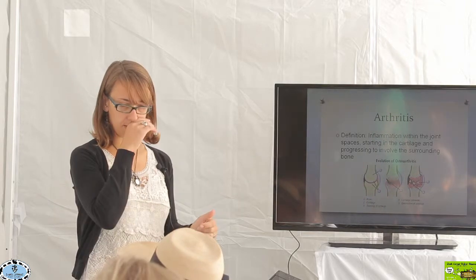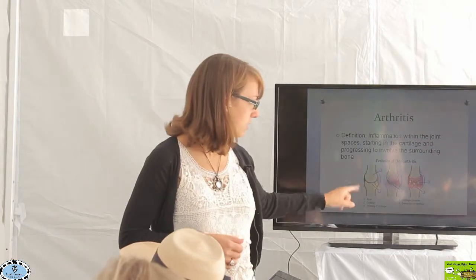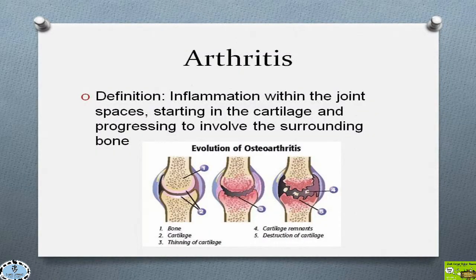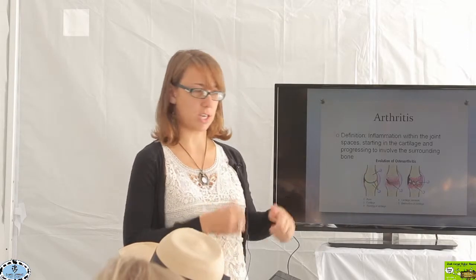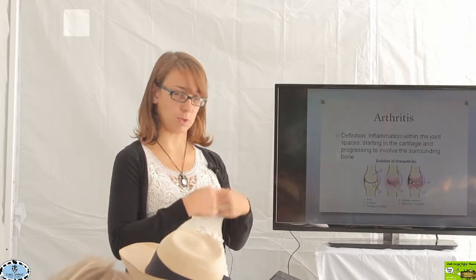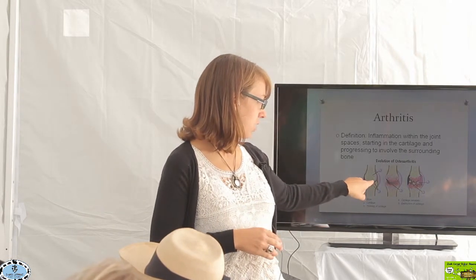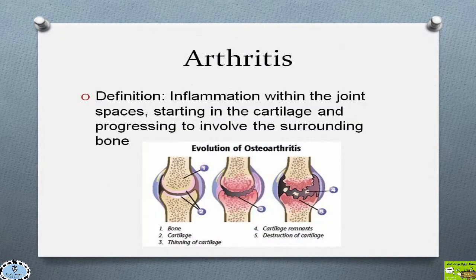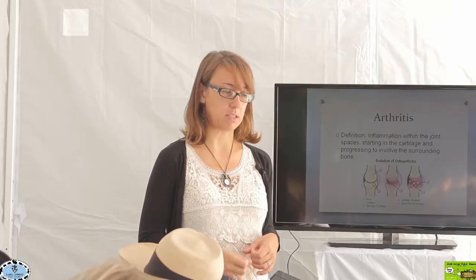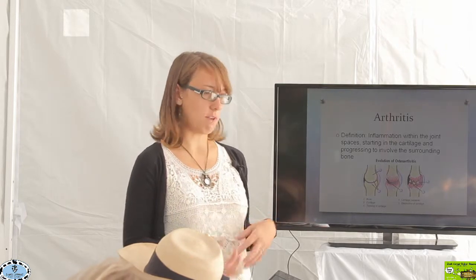Arthritis starts in the cartilage. In the pictures here, you can see a normal joint with two bones and cartilage on their ends — nice and soft, keeping the joint fluid and allowing the bones to move past one another. When arthritis occurs, you start to have destruction within that cartilage. In the early phases, it's the cartilage being damaged, not the bone.